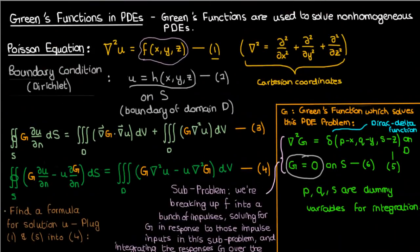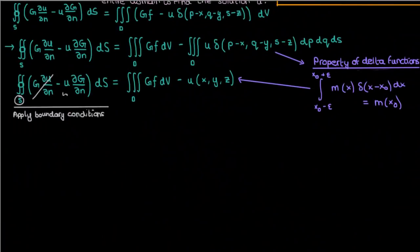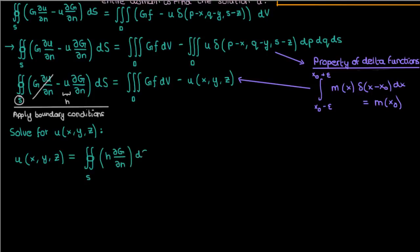Also, u equals h at the boundary S from the boundary condition on u. So now if we isolate for u of x, y, and z, this is what we'll get. The double integral over s of h times partial capital G partial n ds plus the triple integral over d of capital G times f dv.